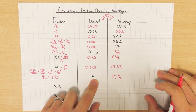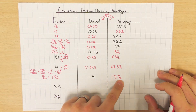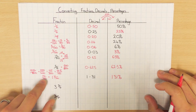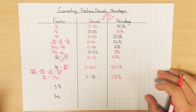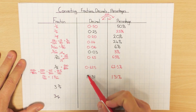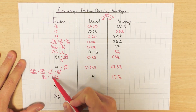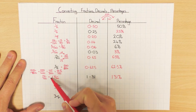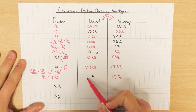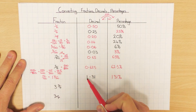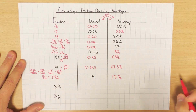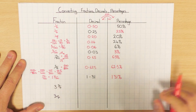Of course, if that was 2.31, that would be 231% — so 231 over 100, and 100 goes into it 2 times. Essentially, you might have already spotted this: if you have one whole number in the decimal, you should have a whole one in the mixed number. If it's a 2, that whole number should be a 2. If it was a 7, that should be a 7 — because that's just how many whole ones you have.